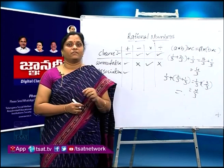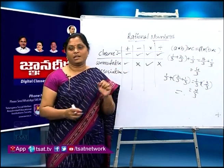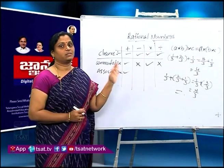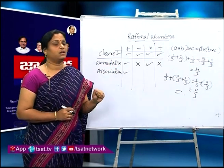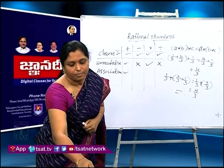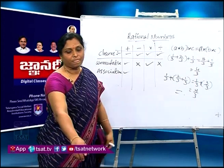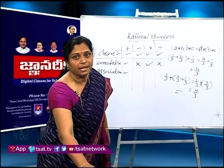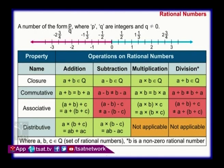Up to now we have learned what are rational numbers, how to represent them on the number line, how to insert rational numbers between two rational numbers, and also the properties. We use these properties in our calculations — these properties make calculations easy. Associative property does not hold for subtraction. Rational numbers are also not associative under division. Take this table: closure, commutative, associative, distributive.